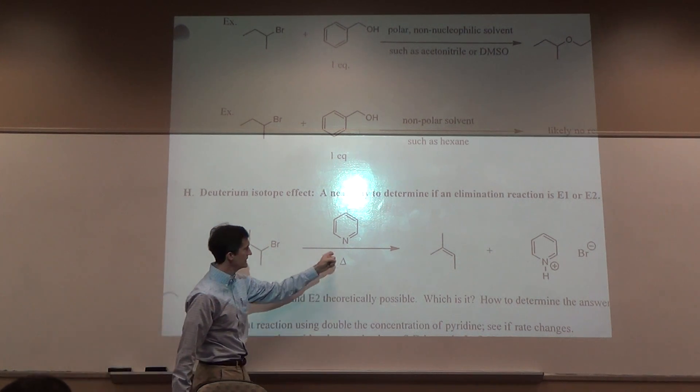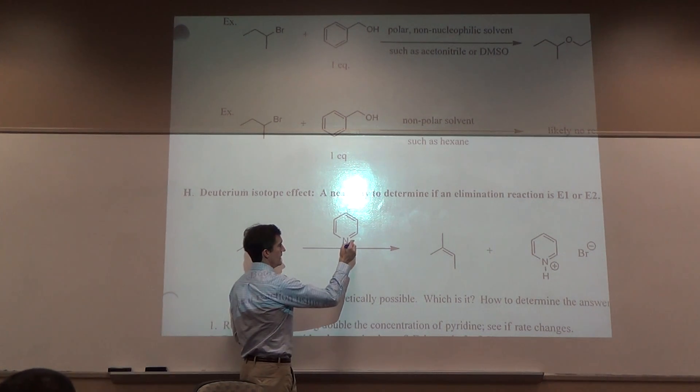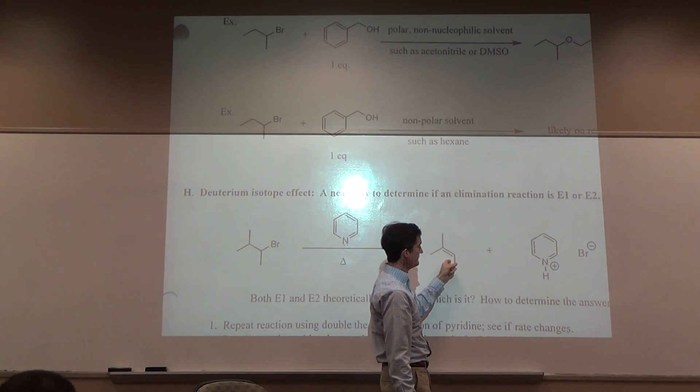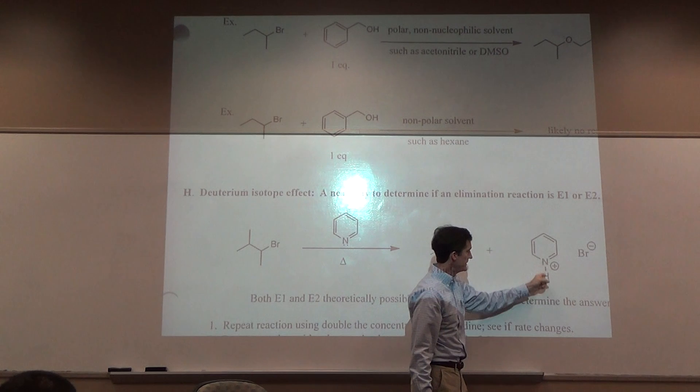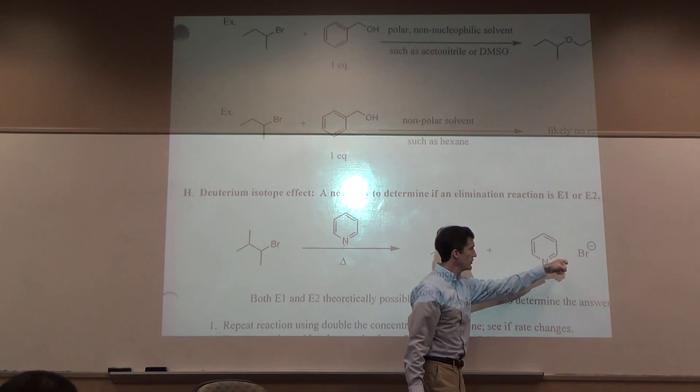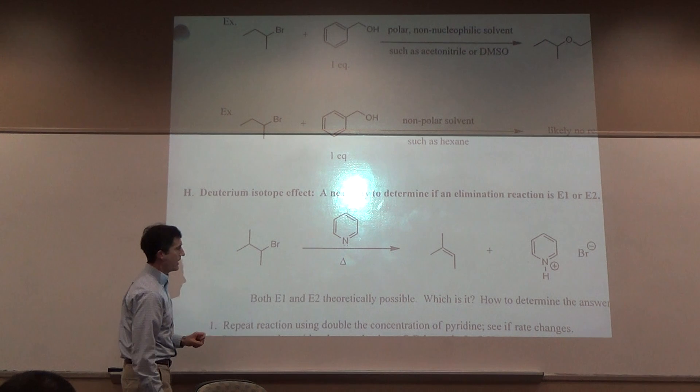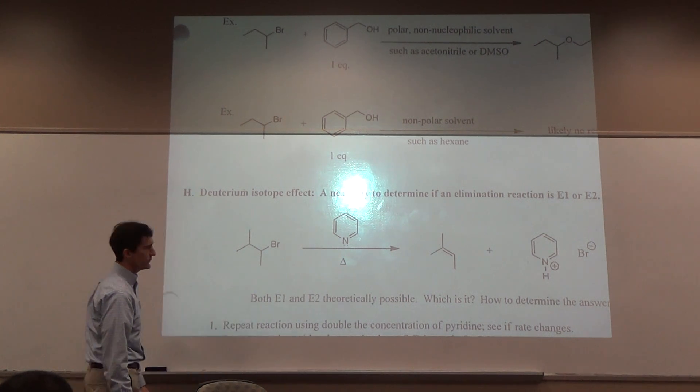Look at this reaction. You take this alkyl bromide, treat it with pyridine. You can get the alkene by elimination reaction, and then pyridine has the H. That's pyridine hydrobromide. Both E1 and E2 are theoretically possible.